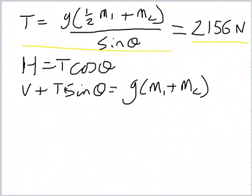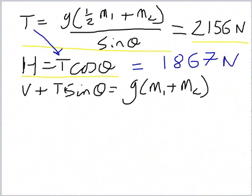But what about the forces at the hinge? From the horizontal balance of forces, we worked out that H equals T cos theta, and we know T from here. So that gives us a value of 1867 newtons, which is also OK.